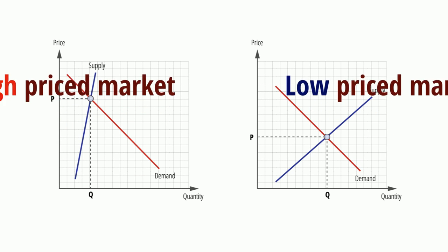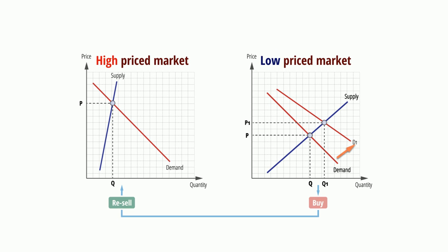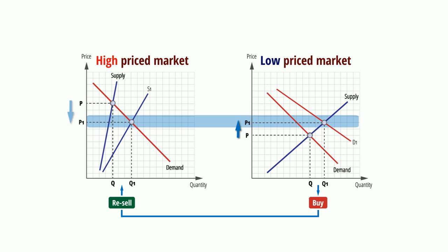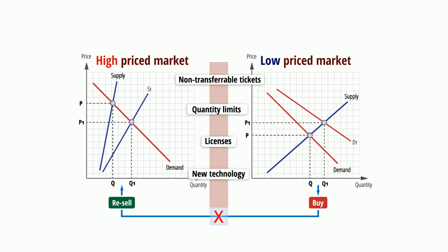To make price discrimination work effectively, firms need to prevent arbitrage, which is a process where traders, acting as either buyers or sellers, can exploit price differences for identical products, buying where the price is lower and selling where it is higher. The effect of this is to make prices converge and make sustained price discrimination impossible. Trading can be prevented or limited in several ways, such as having non-transferable travel tickets, limiting the quantities that can be bought, having licensed traders or outlets, and using new technology to identify and control trading activities.